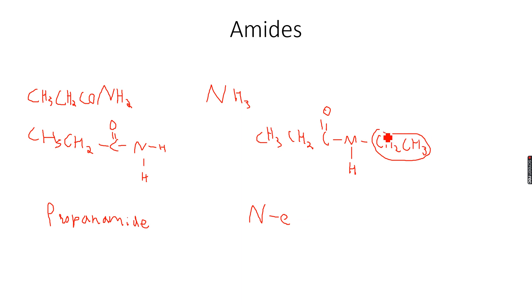Then we write propanamide because we have three carbons here, which is for the CH3CH2CO - three carbons, so propanamide. The naming of disubstituted amide is done as N-ethyl propanamide because an ethyl group is attached to the nitrogen atom.